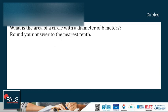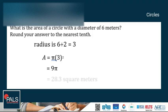Let's try an example. What is the area of a circle with a diameter of 6 meters? Round your answer to the nearest tenth. If the diameter is 6, so the radius is 6 divided by 2, which is equal to 3 meters. Using the area formula, then plugging in the radius, we have A = π × 3². Then simplifying, we have 9π, and the final answer is 28.3 square meters.